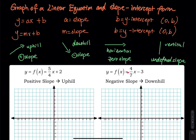We have four types of slopes. The first type is going uphill — the slope is positive. Going downhill, the slope is negative. Traveling on the horizontal line, the slope is equal to zero. A vertical line means the slope is undefined. In this chapter, we will focus on the horizontal — the zero slope.